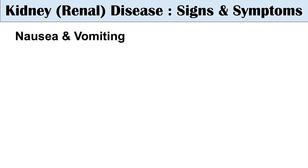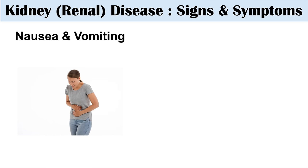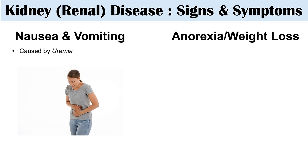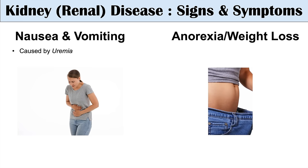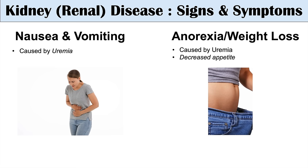Uremia can cause other signs and symptoms including nausea and vomiting. Patients in advanced kidney disease are often very nauseous and don't feel well. This can lead to anorexia or weight loss — patients can become very thin due to uremia, ultimately caused by nausea and vomiting leading to a very low or decreased appetite.